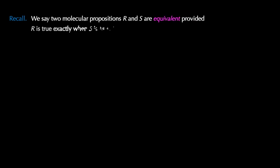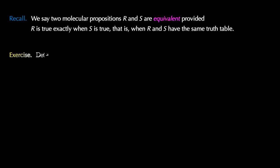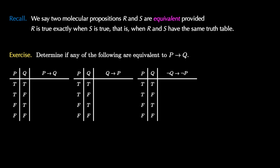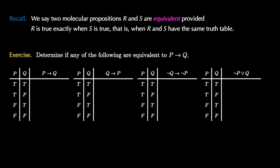Now that we know the conditional connective, let's investigate some equivalences and some propositions that are not equivalent to the conditional. Recall that two molecular propositions R and S are equivalent when they have the same truth table. Let's determine if any of the following are equivalent to p implies q: p implies q itself, q implies p, NOT q implies NOT p, and NOT p or q. Pause the video and try to fill out these truth tables.